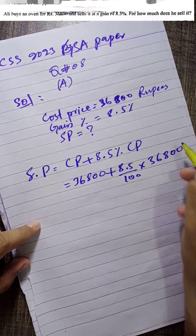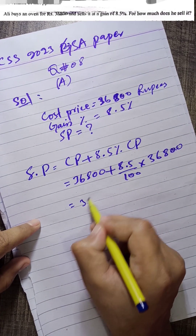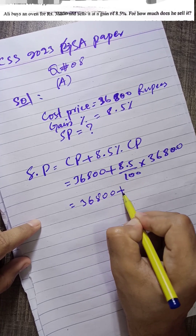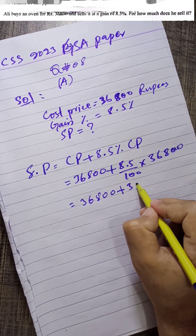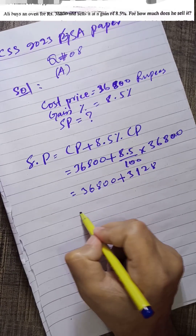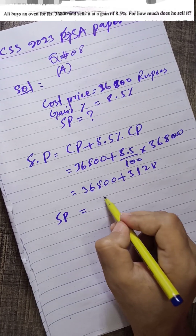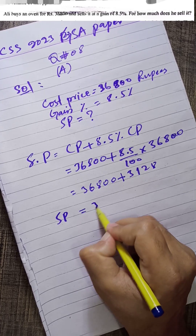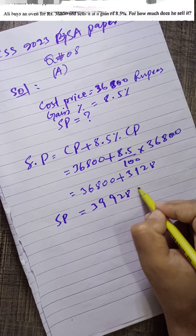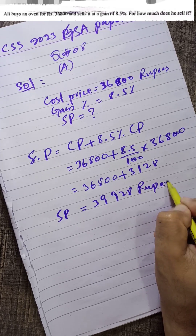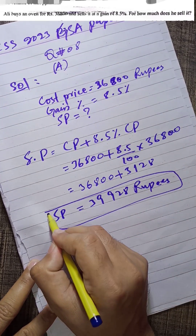Calculating 8.5% of 36,800 gives 3,128. So if we add this, the sale price will be equal to 36,800 plus 3,128, which equals Rs. 39,928. This is the required sale price of the oven.